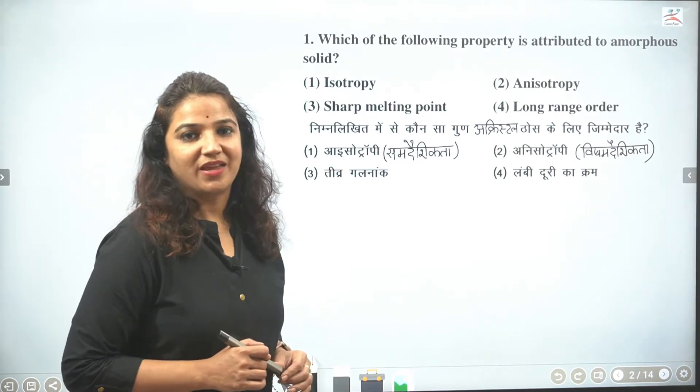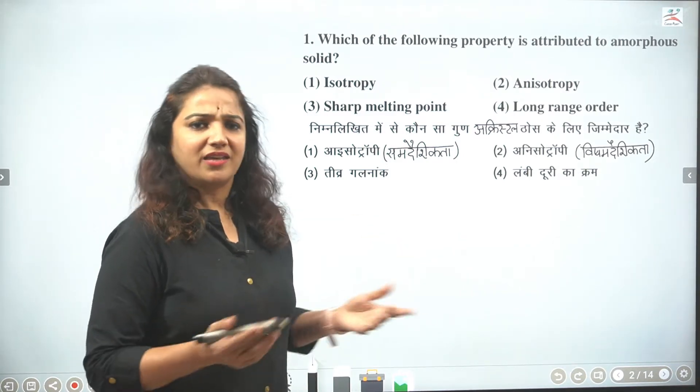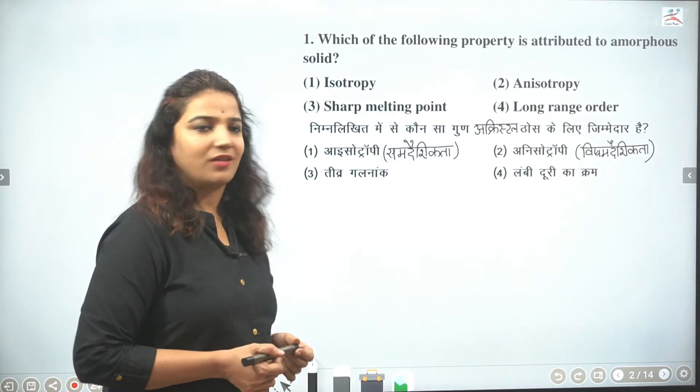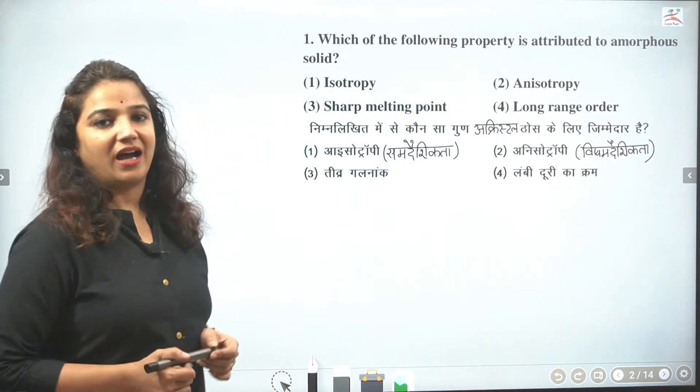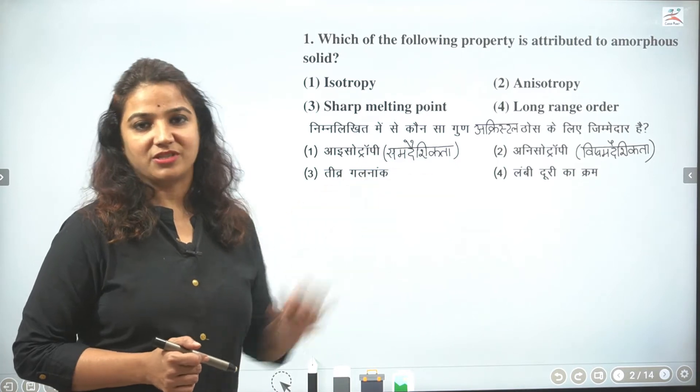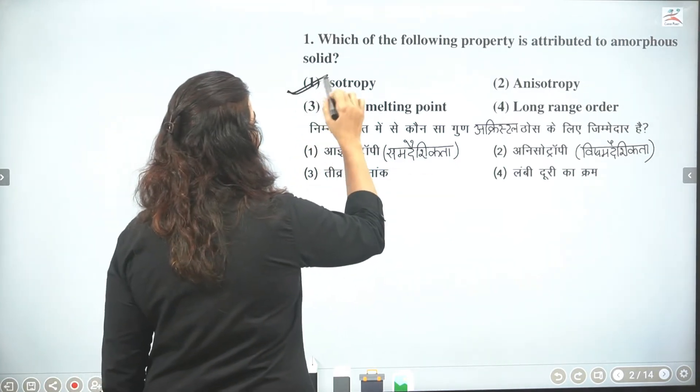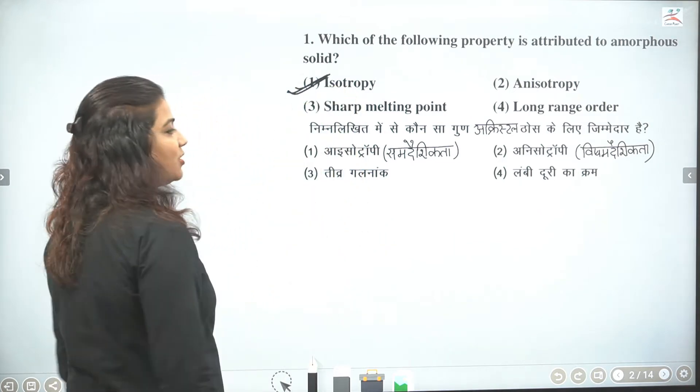Then anisotropy, different directions see physical properties ki value alag alag milna. Yeh bhi property crystal ki hai. So correct answer aapko mil gaya isotropy. Isotropy is the characteristic of amorphous solid. Clear? So we will say here our correct answer is amorphous solid ke liye isotropy.